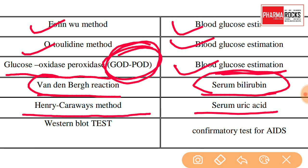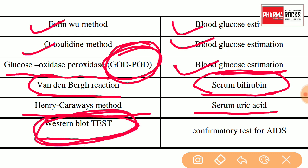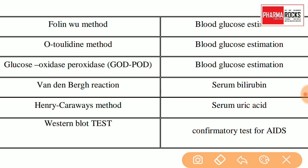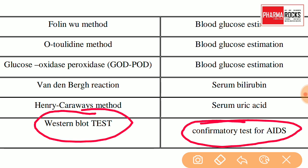Henry Caraway's method is for serum uric acid. And Western blot test — most important — Western blot test is the confirmatory test for AIDS. ये question में ELISA option भी रखते हैं confuse करने के लिए, and students usually select ELISA, but that is a wrong option. The correct answer is Western blot test. Copy में mark कर लो, highlight कर लो, और regularly revise कर लो: confirmatory test for AIDS is Western blot test. ELISA test identification के लिए है, but उसको confirm करने के लिए Western blot test perform की जाती है।